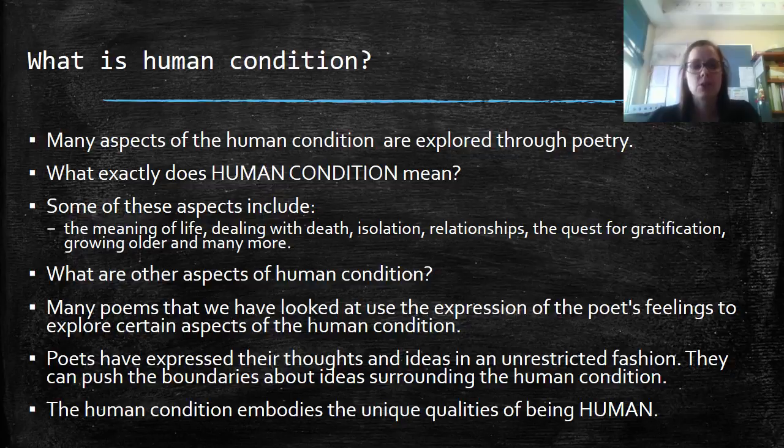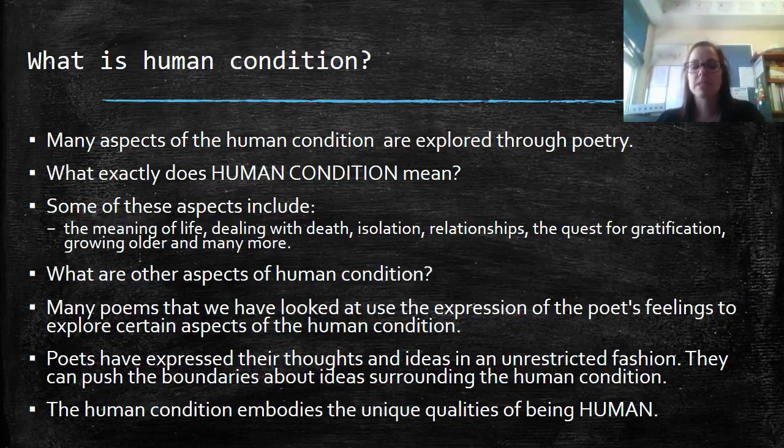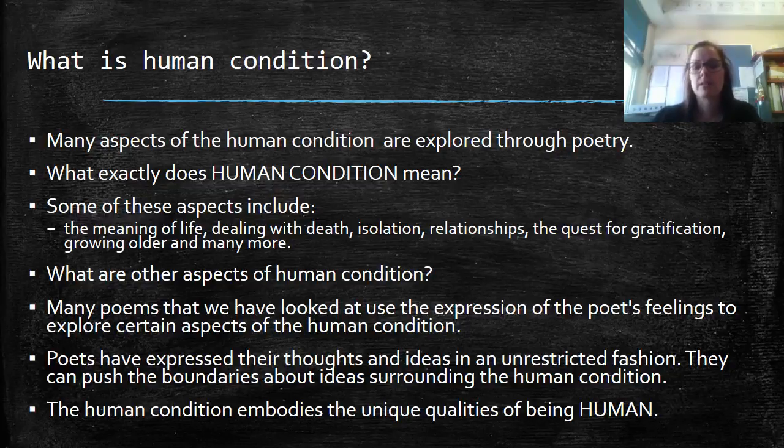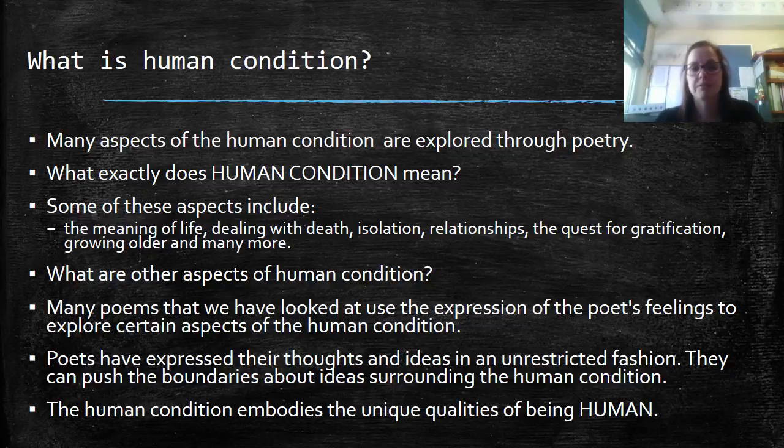The entire feature article is based on the notion of human condition. You need to understand that human condition is anything that has to do with the unique qualities of being human. So that could be the meaning of life, dealing with death, isolation, relationships, the quest for gratification, growing older, and many more. Each poet expresses their thoughts and ideas in an unrestricted fashion. They can push the boundaries about ideas surrounding the human condition. In preparation you need to identify what the human condition is for each of the poems, and then choose two poems that you're going to talk about in your feature article.